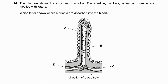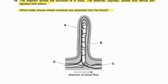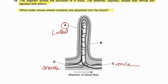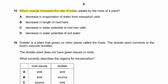Question number fourteen: the diagram shows the structure of a villus with arteriole, capillary, lacteal, and venule labelled. Which letters show where nutrients are absorbed into the blood? Label A is the lacteal, D is the arteriole bringing blood in, and C is the venule taking blood away. Materials are absorbed directly into the blood at B — so 14B is the correct answer.